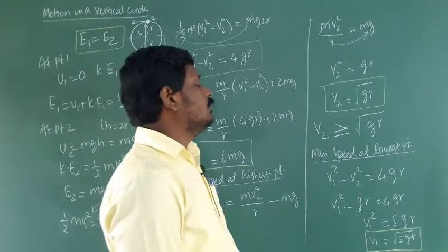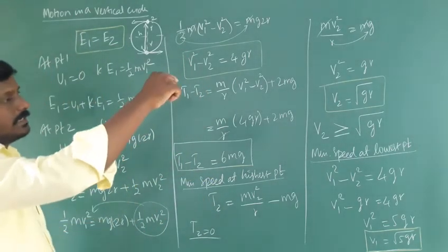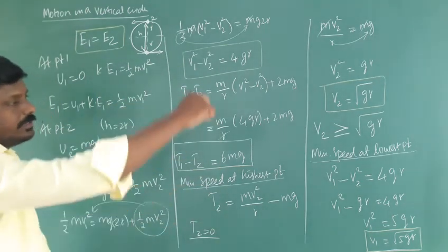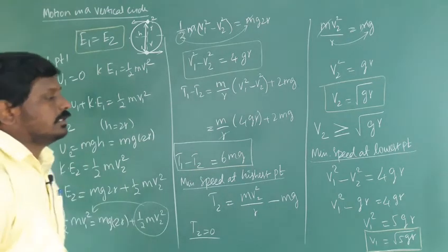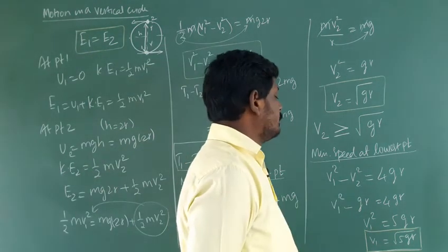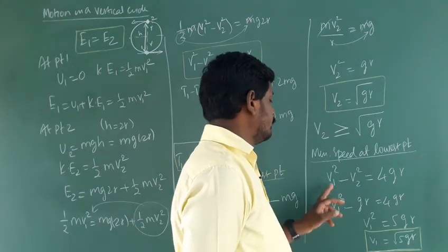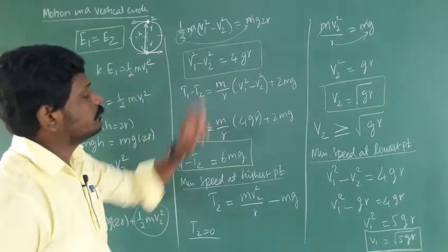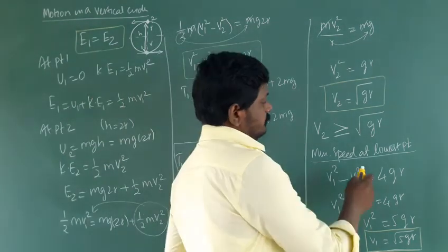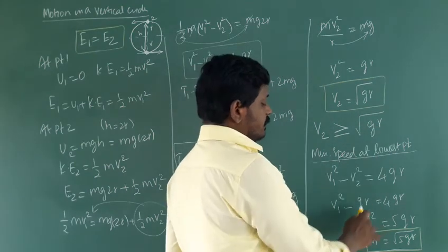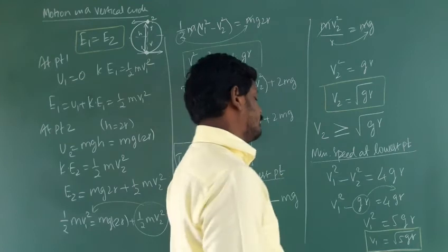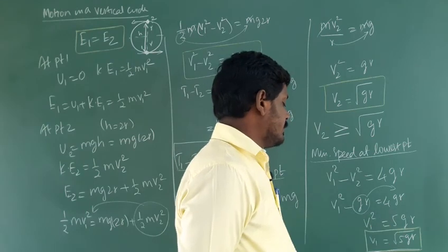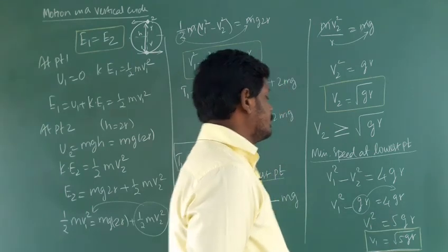For the minimum speed at the lowest point: the object moves towards gravity so its velocity is much higher compared to the highest point. We know V2 equals square root of gr and V1 squared minus V2 squared equals 4gr. Substituting V2 squared equals gr into the equation: V1 squared equals 4gr plus gr equals 5gr, so V1 equals square root of 5gr.